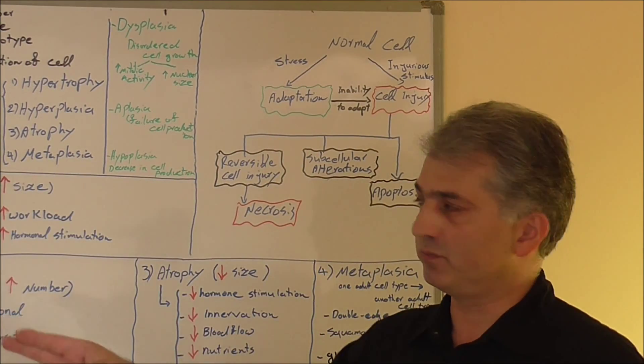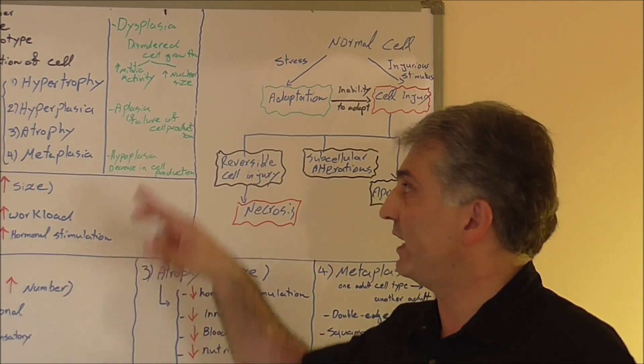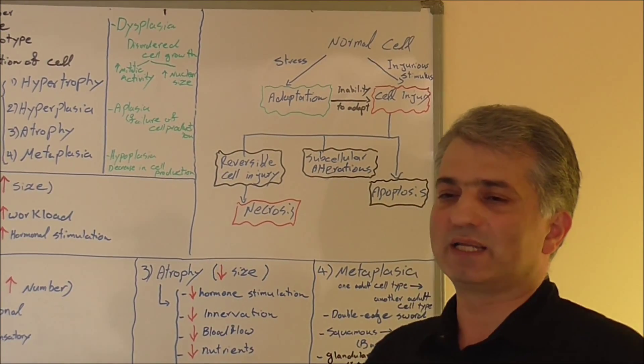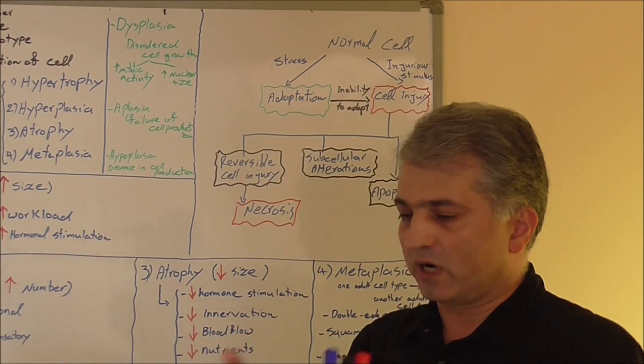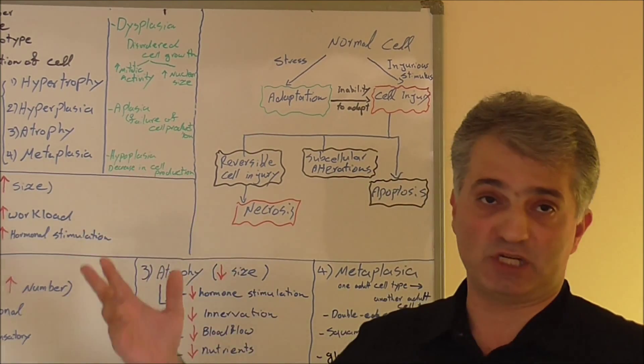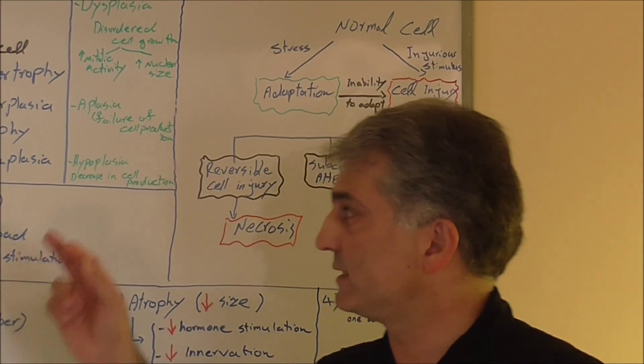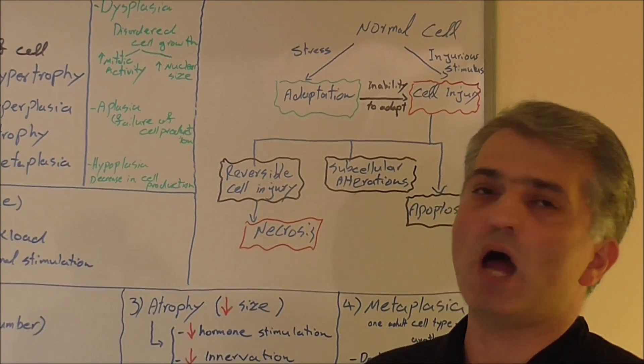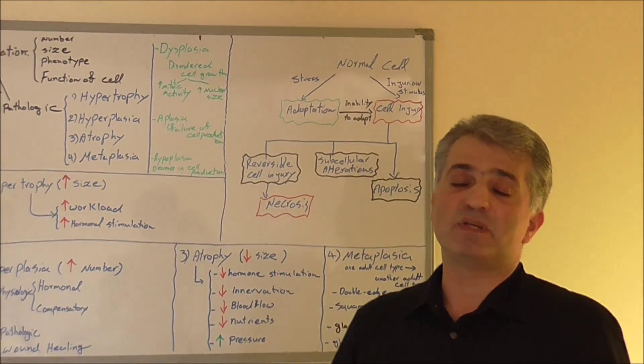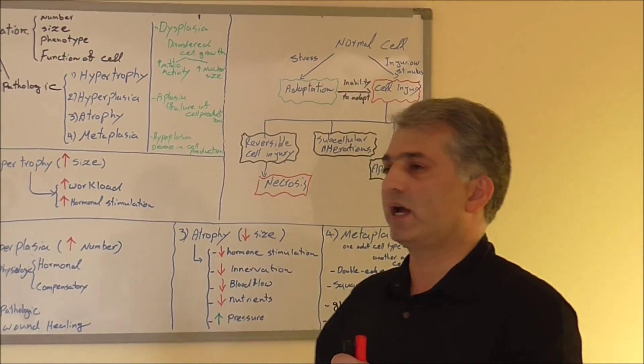Aplasia: 'a' means no. Aplasia means failure of cell production, mostly during embryonic life when there is something wrong, like there's no circulation or there's a blockage. Those organs or tissues won't develop and you don't see any. We call it aplasia. Sometimes we will see some cell production but not as much as it's supposed to be. It's a decrease in cell production. That's why we call it hypoplasia. Aplasia: none. Hypo: less than normal. And dysplasia: disordered cell growth, abnormal mitotic activity, and the cell is very disorganized in structure as well.